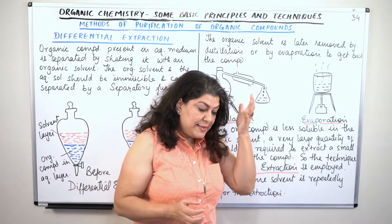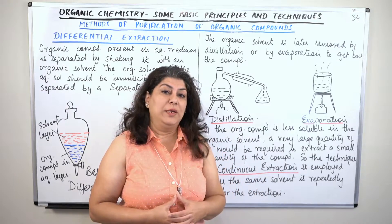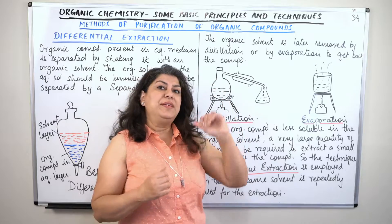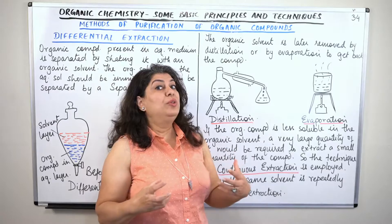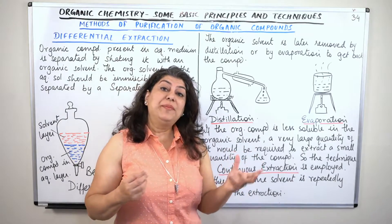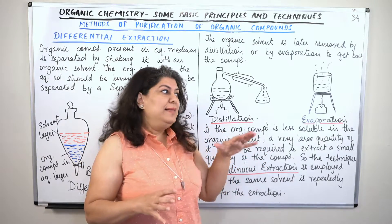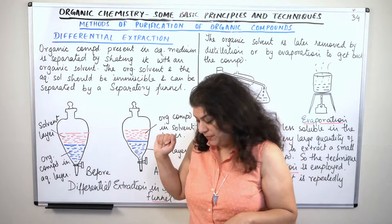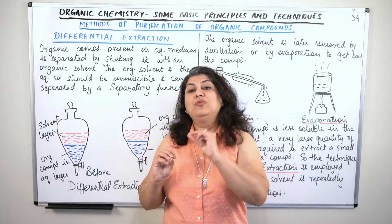Now let's assume the compound is non-volatile but cannot withstand even 100°C — it can decompose below 100°C. In that case, how would you separate it from the solvent in which it is dissolved? In that case we use the process of differential extraction: we find another solvent in which that compound would be soluble.